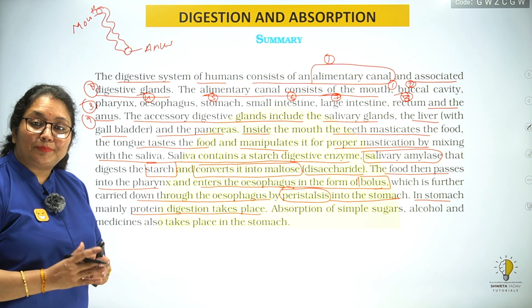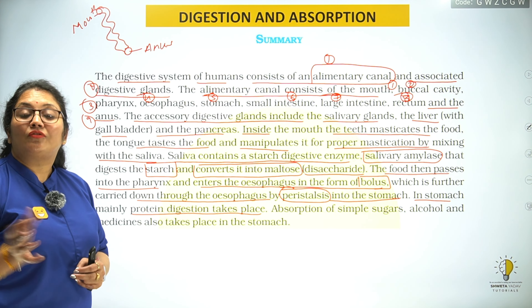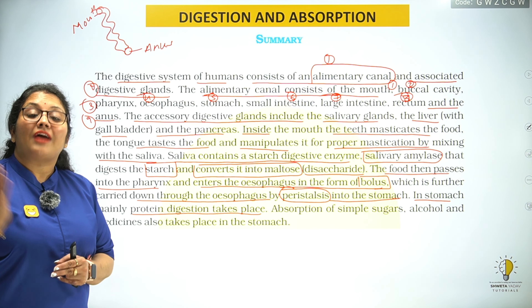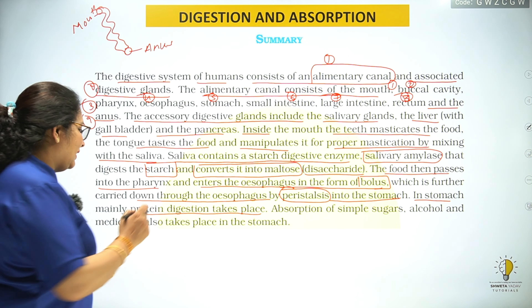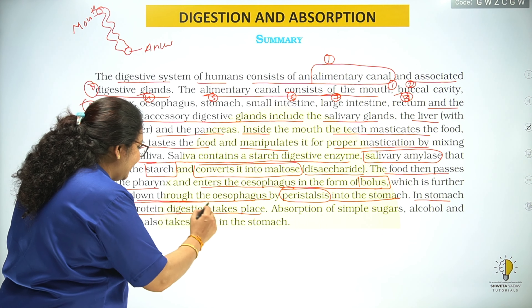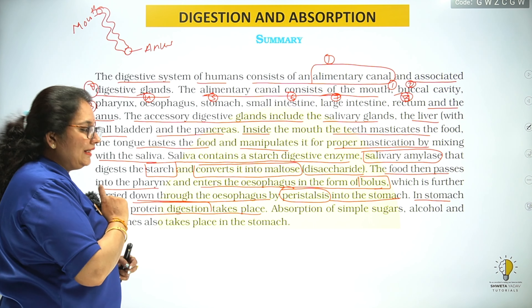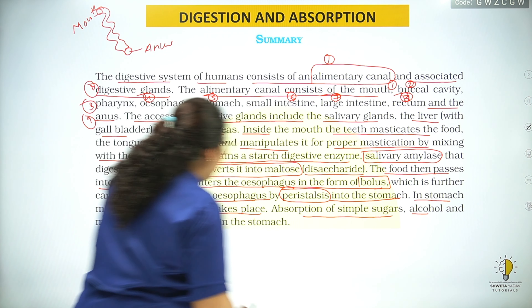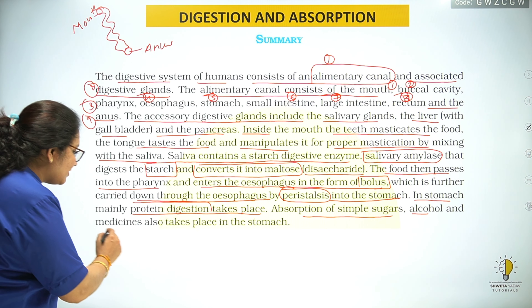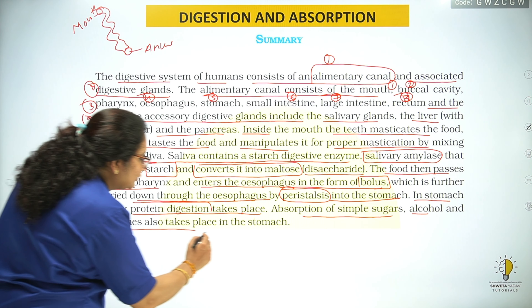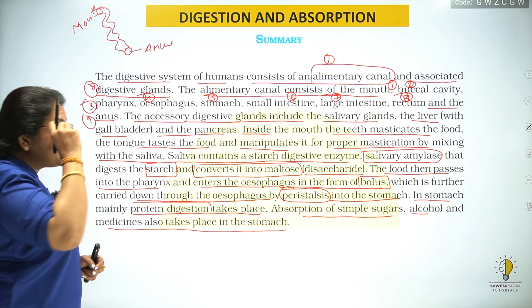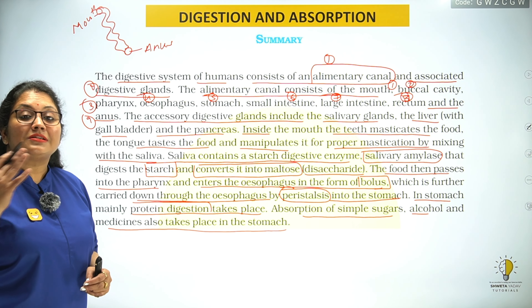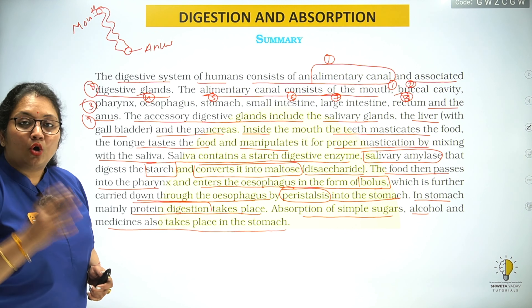Peristalsis carries food into the stomach. The stomach is the site of digestion of protein. Absorption of simple sugar, alcohol and medicines also takes place in the stomach.